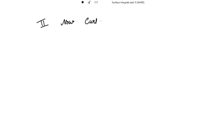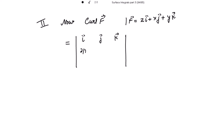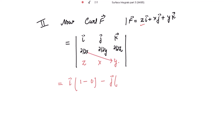Now let's evaluate the right hand side integral by finding the curl of F vector first. This is equal to the determinant with i vector, j vector, k vector in the first row; ∂/∂x, ∂/∂y, ∂/∂z in the second row; and z, x, y in the third row. Evaluating: i vector times (∂y/∂y − ∂x/∂z) = (1 − 0); minus j vector times (∂y/∂x − ∂z/∂z) = (0 − 1); plus k vector. So we are getting i vector plus j vector plus k vector.